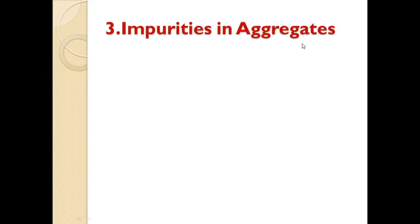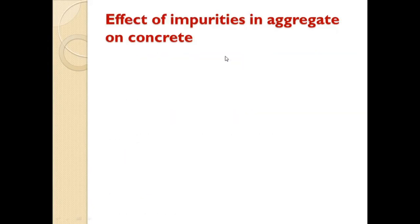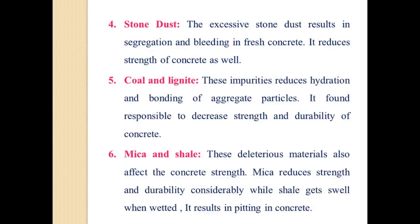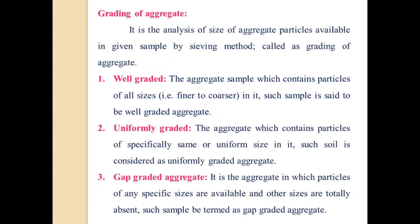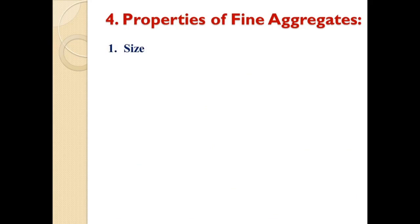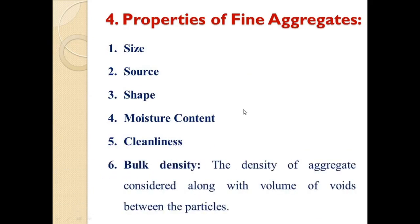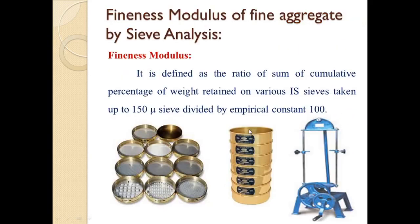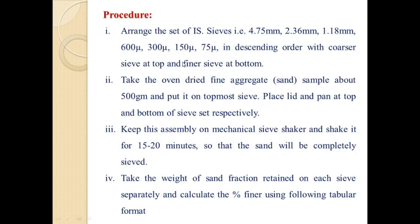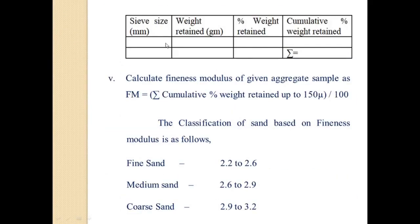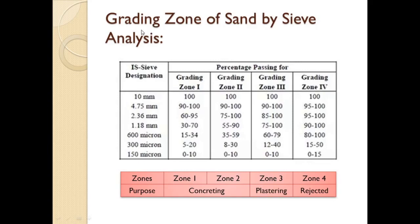Hello friends, welcome. In the previous lecture we discussed impurities in aggregate, effect of impurities in aggregate, grading of aggregate — well graded, uniformly graded, fine aggregate — and the properties of fine aggregates: size, source, shape, moisture content, cleanliness, bulk density, fineness modulus, specific gravity, silt content, and bulking. We also discussed the fineness modulus of fine aggregate by sieve analysis — what it means and the procedure for finding it.